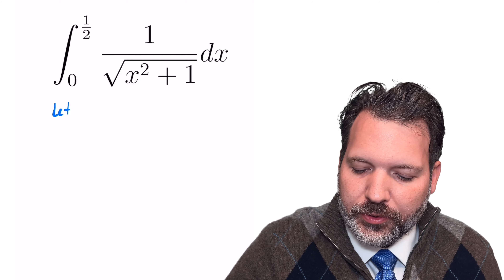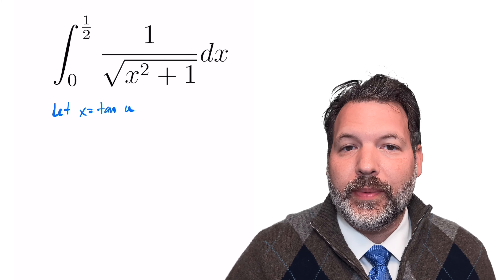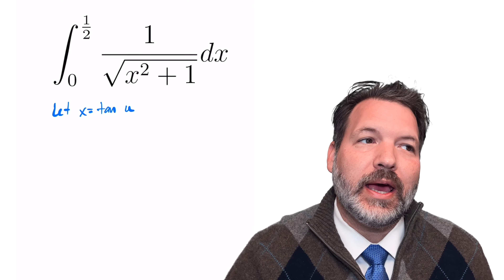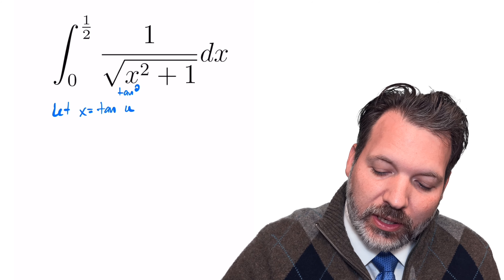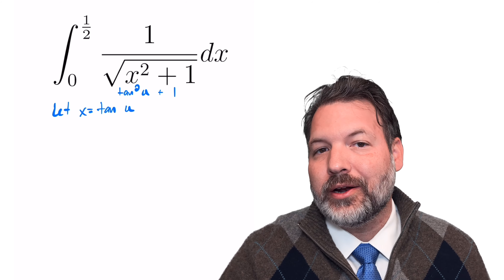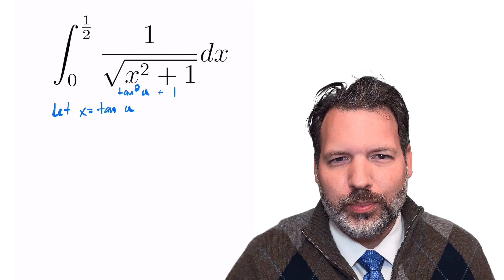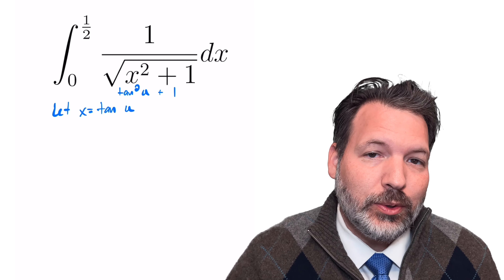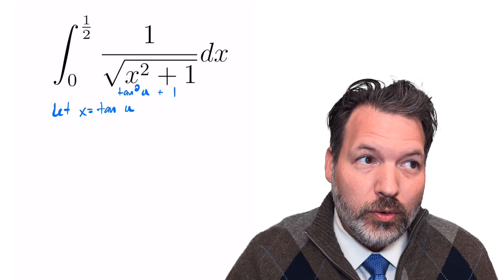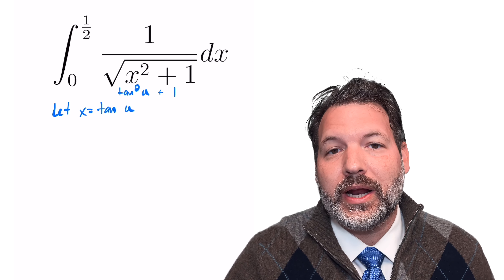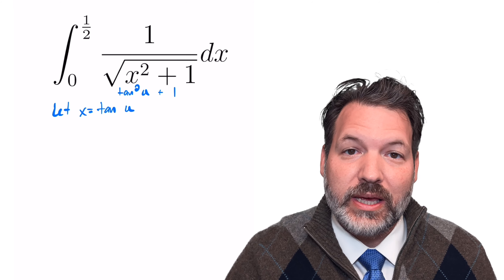The first thing I'm going to do is a trigonometric substitution — I'm going to set x equal to tangent of u. What that's going to do is let me simplify the denominator considerably. Right now it's messy with the square root of x squared plus 1, but if x equals tan u, then x squared plus 1 becomes tangent squared u plus 1, which by a Pythagorean identity I can restate as secant squared of u, and then I can take the square root of that pretty easily.